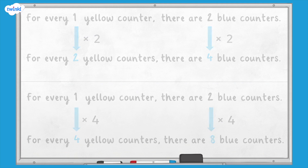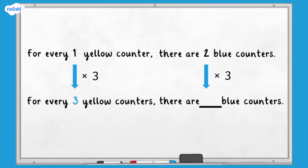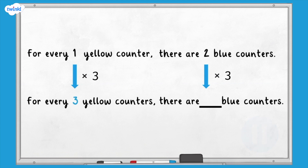If we had three yellow counters, how many blue counters would there be? We have multiplied the number of yellow counters by 3, so we need to do the same to the number of blue counters. If we had three yellow counters we would have six blue counters. For every three yellow counters, there are six blue counters.